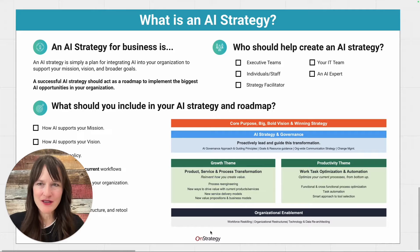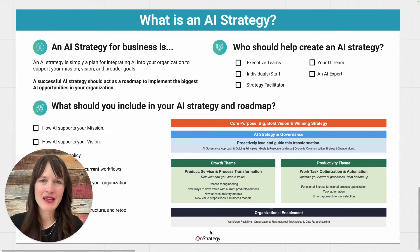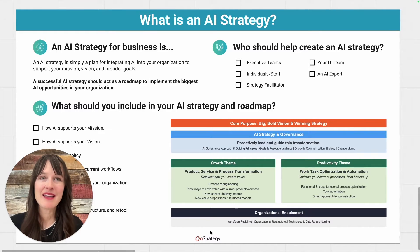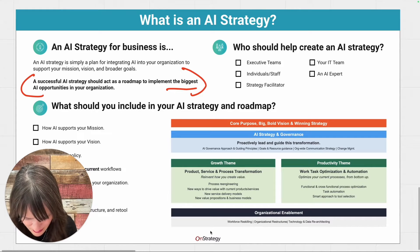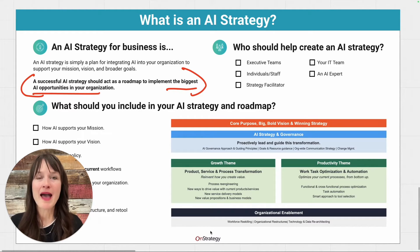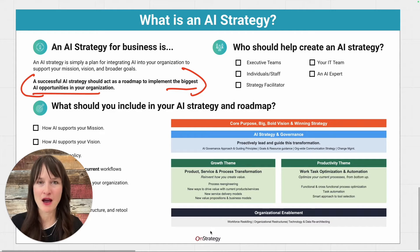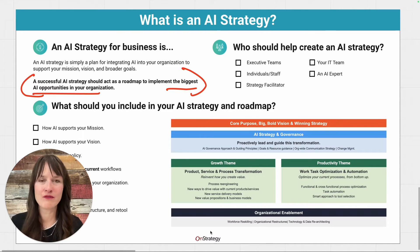What is an AI strategy? Simply put, it is a plan to integrate AI, generative AI, automation, and machine learning into your organization. A successful AI strategy should act as a roadmap to implement your biggest opportunities in your organization. What's happening right now in a lot of organizations and companies is there's just chaos around where to focus, how to use AI, where to start — all of those things. This entire framework is going to create organization out of the chaos.